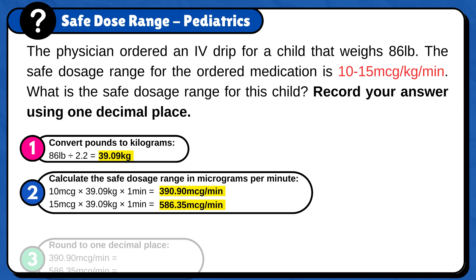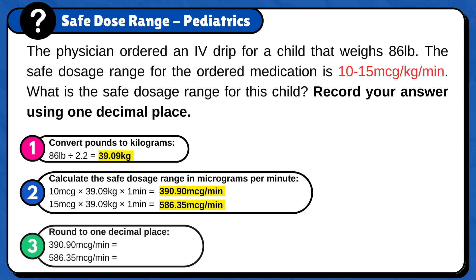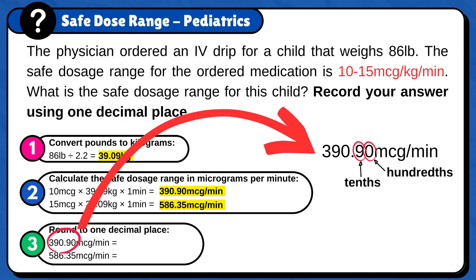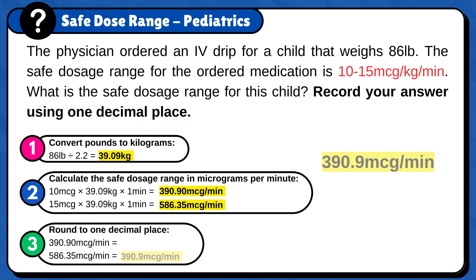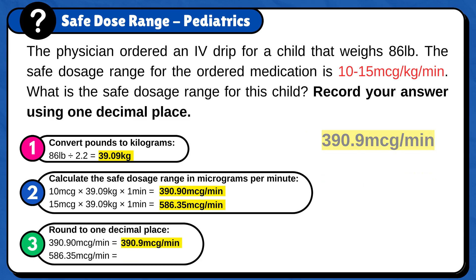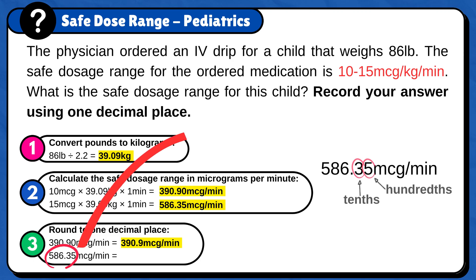Last, we need to round both answers to one decimal place. Since the hundredths digit is between 0 and 4, you would round down by keeping the tenths place the same. And the answer is 390.9 micrograms per minute.